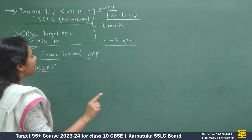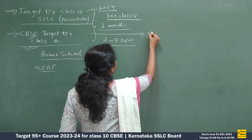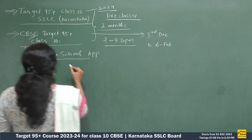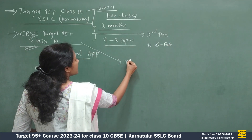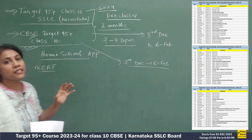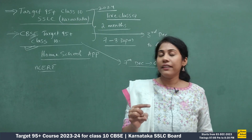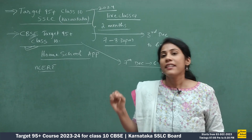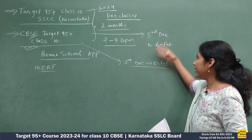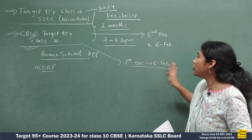The duration of the course is two months. For SSLC students, the course will start from 3rd December and end by 6th February. For CBSE students, the course will start from 7th December and end by 6th February. For CBSE, some concepts are deleted for the 2024 examination — like Sources of Energy, Periodic Classification of Elements, and Sustainable Management — so that's why the CBSE course starts a little later, from 7th December.